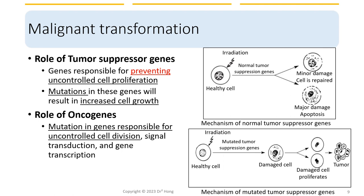Healthy cells can obtain multiple mutations in their DNA due to carcinogen exposure, but they may not always develop into cancer because there are genes that can suppress cancer development. These genes are called tumor suppressor genes. They are responsible for preventing uncontrolled cell proliferation. When they function well, they can either initiate DNA repair mechanisms to repair minor damage, or initiate apoptosis when there is major damage to the cell. But when there are mutations in these tumor suppressor genes, it results in increased cell growth and may lead to cancer.